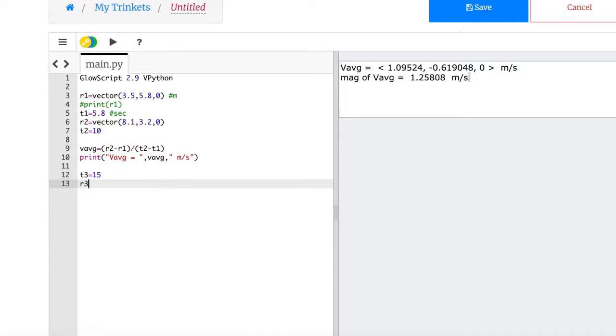Okay, now the next thing was to find, I have t3 equals 15 seconds and I want to find r3. So I'm just going to write down my equation: r3 equals, this is straight from my thing, r1 plus v average times t3 minus t1. Print r3 equals r3 meters.